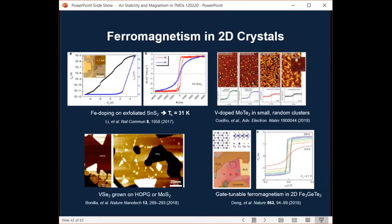Another study on the right top here shows a post-growth incorporation of vanadium into molybdenum telluride monolayers, giving rise to room temperature ferromagnetism, but this is in the form of small randomly distributed clusters that are not uniform. Bottom left shows the vanadium diselenide grown on HOPG or molybdenum disulfide, also showing ferromagnetism at room temperature, but the flake size, as you can see, is order of 100 nanometers. It's very, very small. Another one is on the right bottom here, gate tunable ferromagnetism demonstrated in exfoliated 2D FGT, where an ionic gate raised Curie temperature to room temperature. Really fascinating work here.